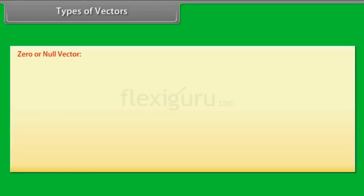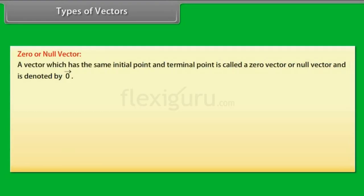Zero or Null Vector: A vector which has the same initial point and terminal point is called a zero vector or null vector and is denoted by vector 0. Vectors AA, OO, BB all are zero vectors.